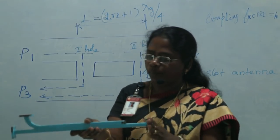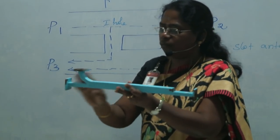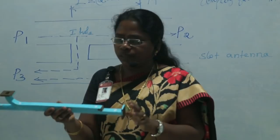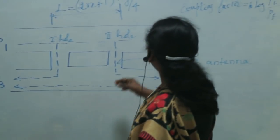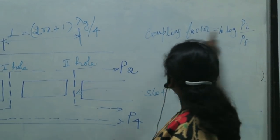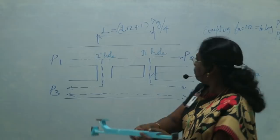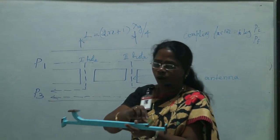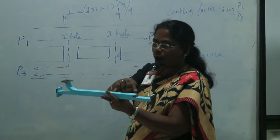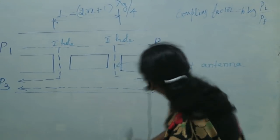The waves flowing in the backward direction are out of phase and therefore cancel. So whenever you give power flow through port 1, you get output in the forward direction, and the backward component is cancelled. The coupling factor is defined as: Coupling Factor = 10 log(Pi / Pf), where Pi is the incident power at the input port and Pf is the forward coupled power received at port 3.